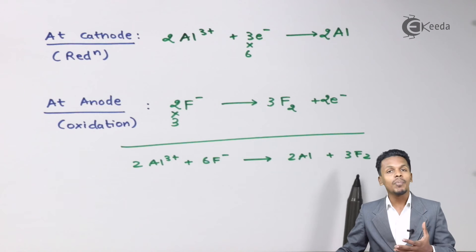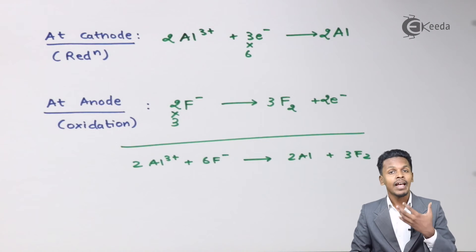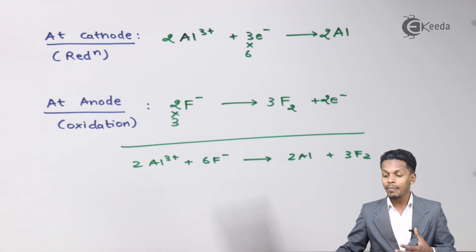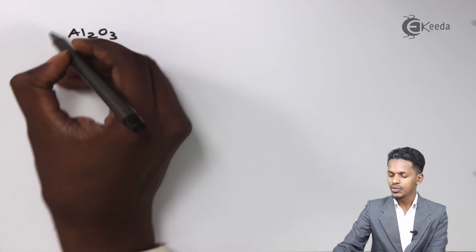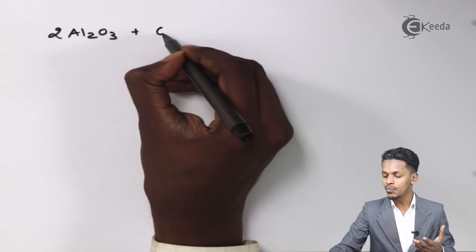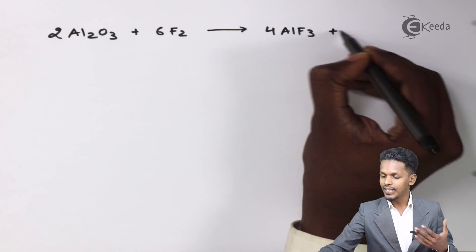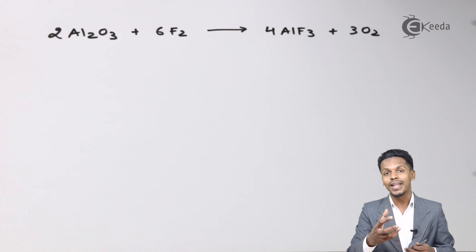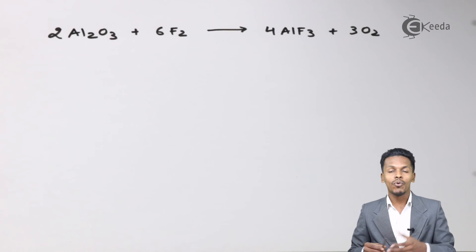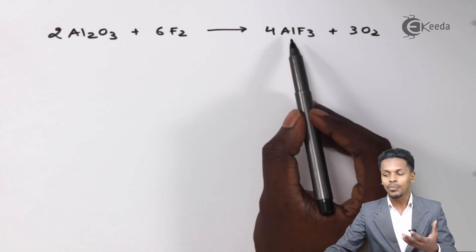The F2 produced plays a very vital role because the electrolytic solution in molten state also consists of Al2O3 and other ores. So the F2 will react with Al2O3: 2 moles of Al2O3 reacts with 6 moles of F2, and the product we get is 4 moles of Al3+ along with 3 moles of O2. This Al3+ will then undergo a redox reaction and that is how we obtain aluminum, and fluorine is evolved again. That fluorine participates in the reaction to convert Al2O3 into Al3+ again. This is how we obtain aluminum along with oxygen.